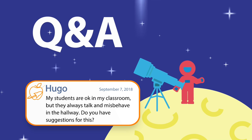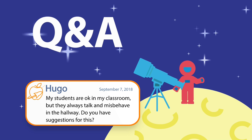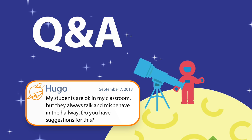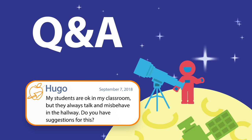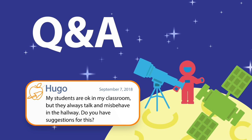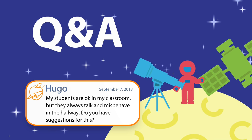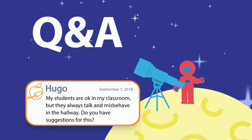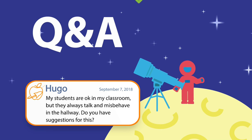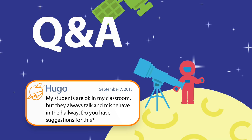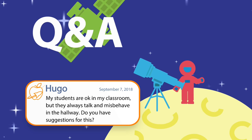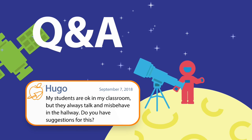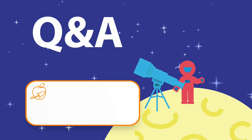Hugo asks: 'My students are okay in my classroom, but they always talk and misbehave in the hallway. Do you have suggestions?' Make sure you have a procedure for how they behave in the hallway. When I was a teacher, I would model what walking and behaving in the hallway looked like. I had a volume control from zero to four — the hallway volume was zero unless a teacher or adult spoke to them directly. I also modeled walking on the right side of the hallway and keeping arms down. If they still misbehave, have a consequence where they remove themselves from the line or the whole class goes back and tries again.